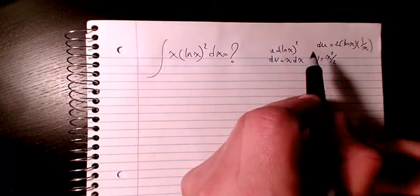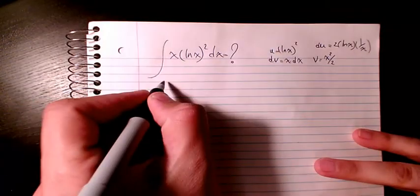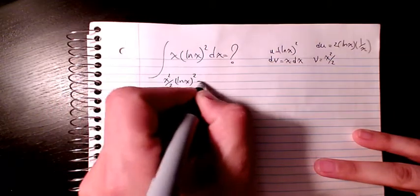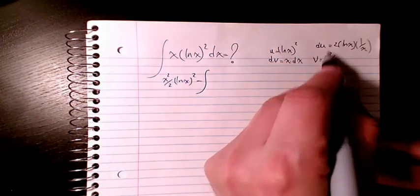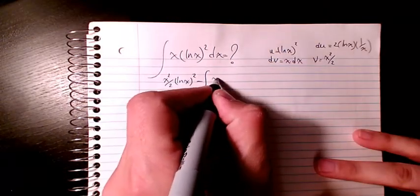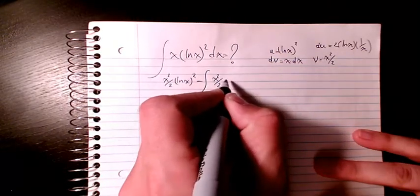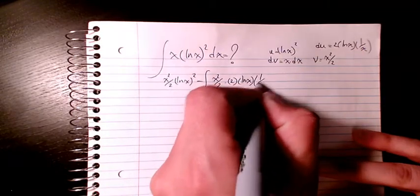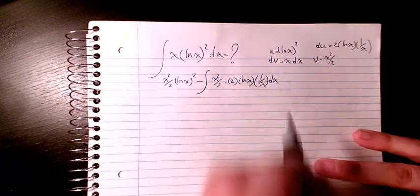So then I can say u times v, which is x squared divided by 2 ln x squared, minus integration of v du. So it's going to be x squared divided by 2 times 2 times ln x, 1 over x, and dx.